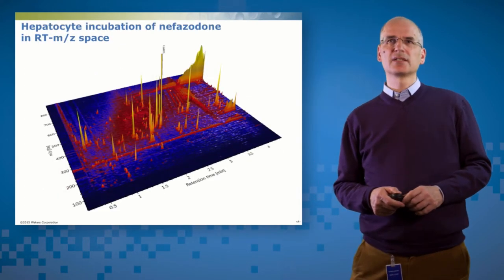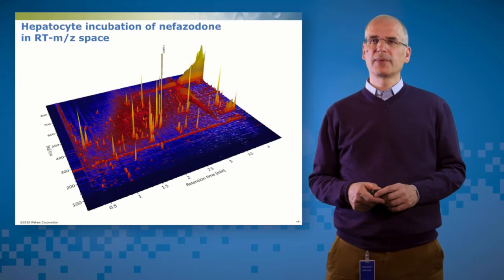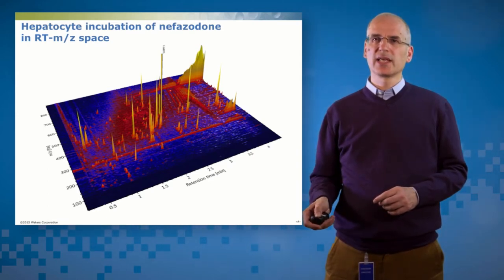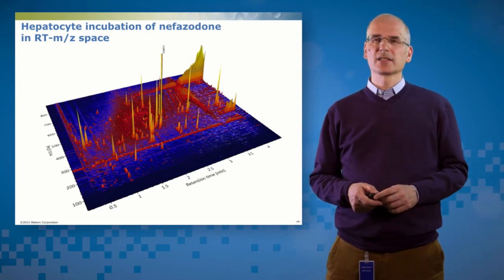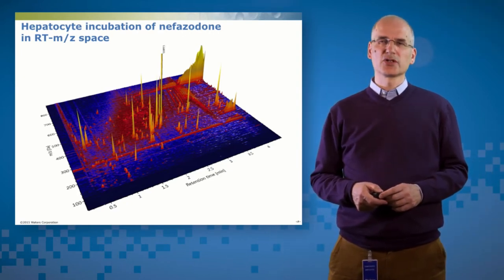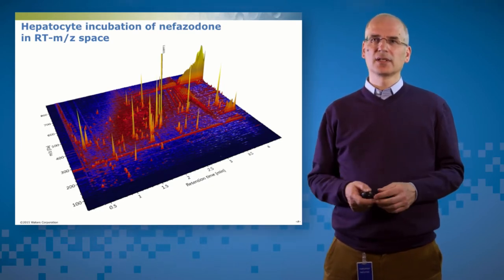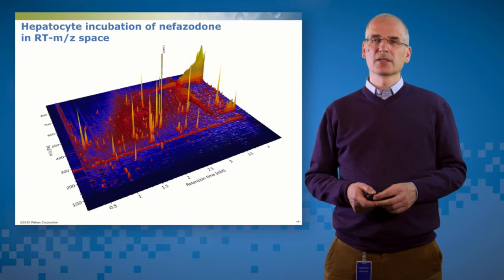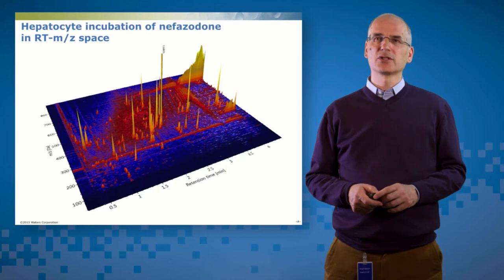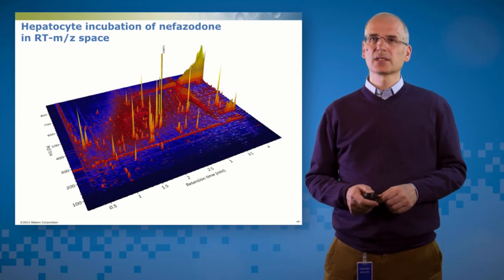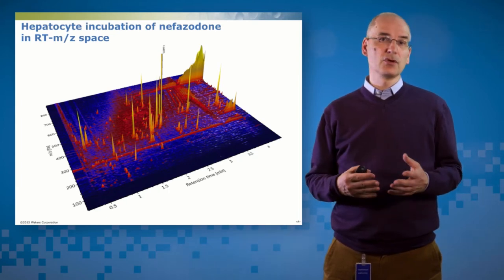So here's a representative nefazodone incubation in hepatocytes and I'm showing the data in a three-dimensional way. So on the x-axis we've got retention time and on the y-axis we have mass over charge and then coming up out of the page we have intensity. So you can see inside here there's a lot of signals, some background noise, some chemical noise and inside that family of peaks there are around 25 to 30 real nefazodone metabolites and those are the ones that we want to hone in on.